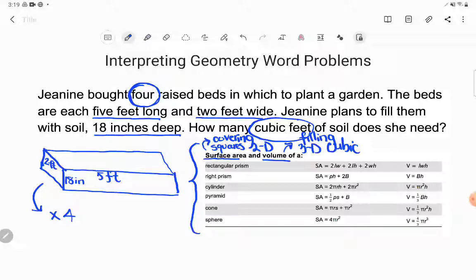Let's see. It says the beds are each five feet long, two feet wide. It's our three dimensional shape. Oh, here we go. Janine plans to fill them with soil. She's not going to pat the soil around the outside of the box. She's actually going to fill the box with soil. And then look again, it says how many cubic feet of soil. That's a three dimensional measurement, a cubic measurement. These are really big clues that I'm looking at volume.